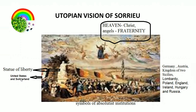United States and Switzerland had already become nation states and they were the first to march out from the area. Germany, Austria, Sicily, Lombardy, Poland, England, Ireland, Hungary and Russia are following.